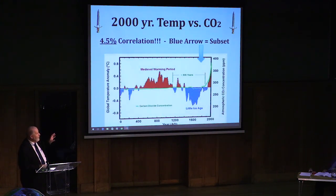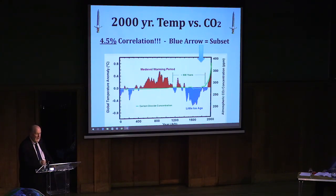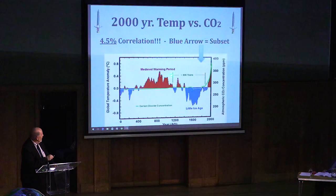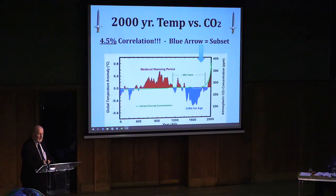This is a 2,000-year look at temperature versus CO2. CO2 is the green line running across here and then shoots up at the end of the Little Ice Age. Meanwhile, the medieval warm period shoots up, the Little Ice Age comes down — no effect whatsoever. Over a 2,000-year period, we have a 4.5% correlation. That's it.